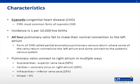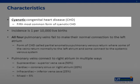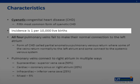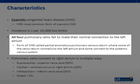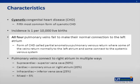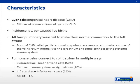Total anomalous pulmonary venous return, or TAPVR, is a form of cyanotic congenital heart disease. It is the fifth most common form of cyanotic congenital heart disease. The incidence is reported to be one per 10,000 live births. TAPVR is defined by all four pulmonary veins failing to make their normal connection to the left atrium. There is also partial anomalous pulmonary venous return, where some veins return normally to the left atrium and some connect to the systemic venous system, but we will not discuss that today.